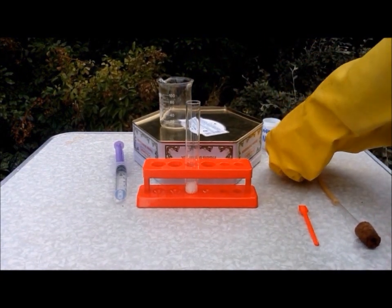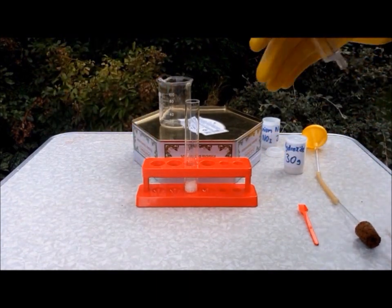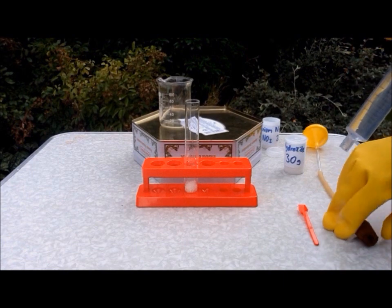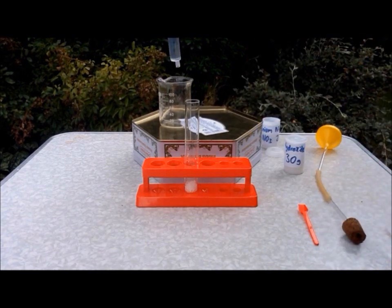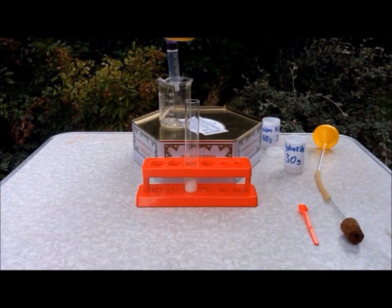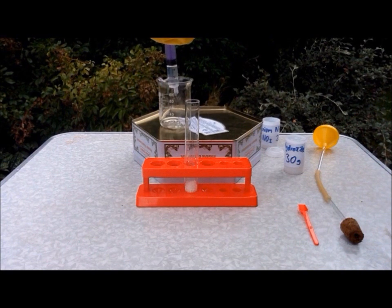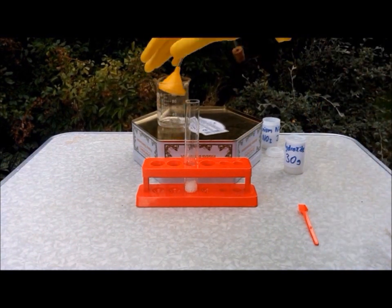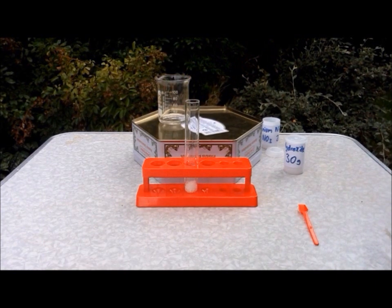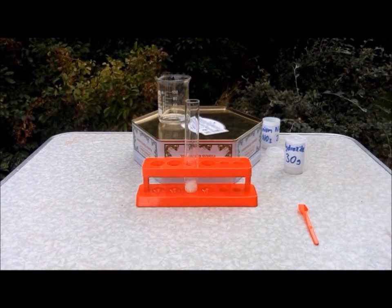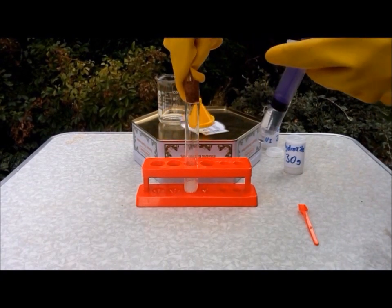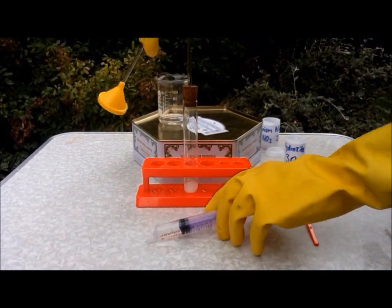And then you need to add about a milliliter of water and then quickly put the cork in the tube. But first you need to put five milliliters of water into the beaker. Then you need to get this ready. Then you need to add a milliliter of water. Put that on.